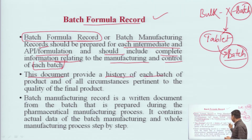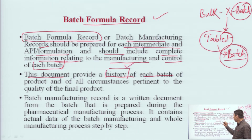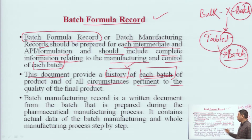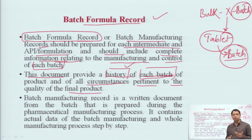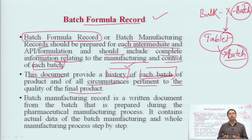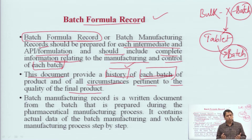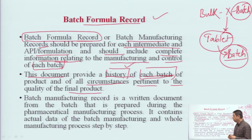This document provides a history of each batch and of all the circumstances pertinent to the quality of the final product — whether it is an API or a formulation. It properly tells us who did what and when, what the result was, what in-process quality controls were performed, what the results were, who was responsible, which equipment was used, which processes were involved, and when testing was performed. All these things are included in the Batch Formula Record.